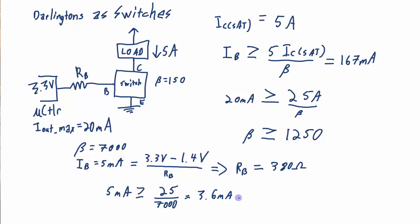So I dropped my IB down to 5 milliamps. What's the lowest I could drop it down to? Well the lowest I could drop it down to is about 3.6 milliamps. And still ensure that my switch, my Darlington transistor that's acting as a switch, is operating in the saturation region.